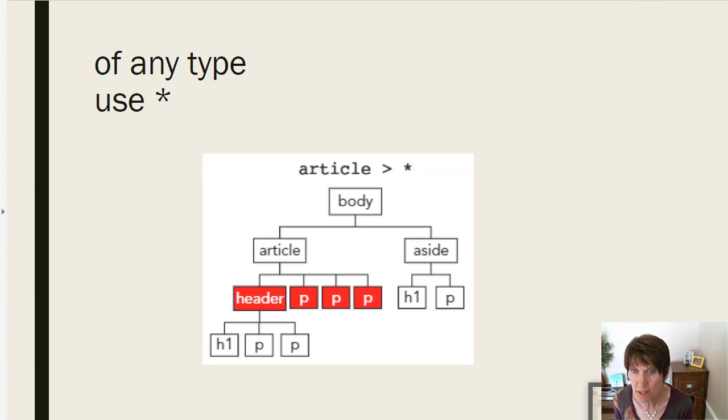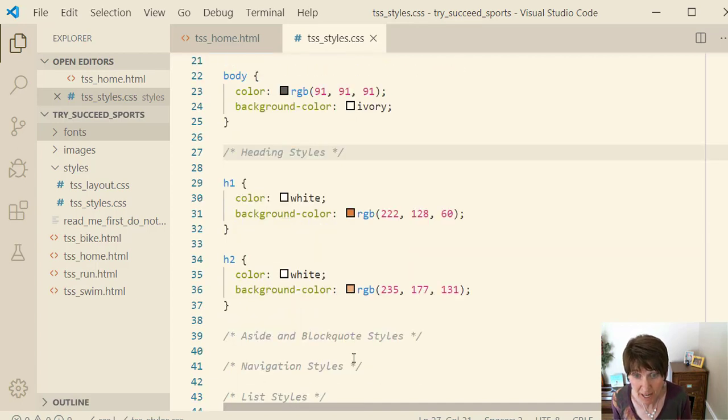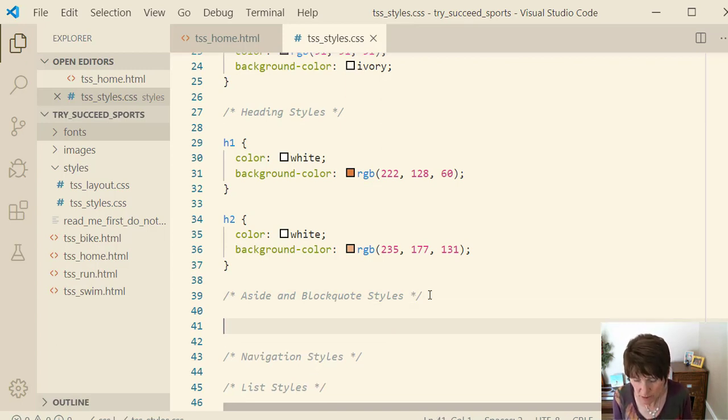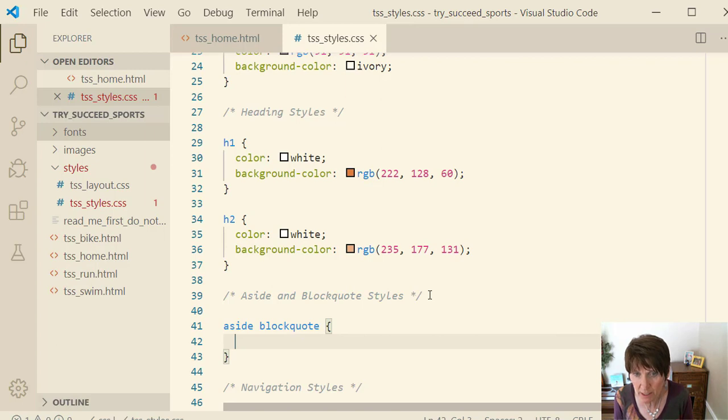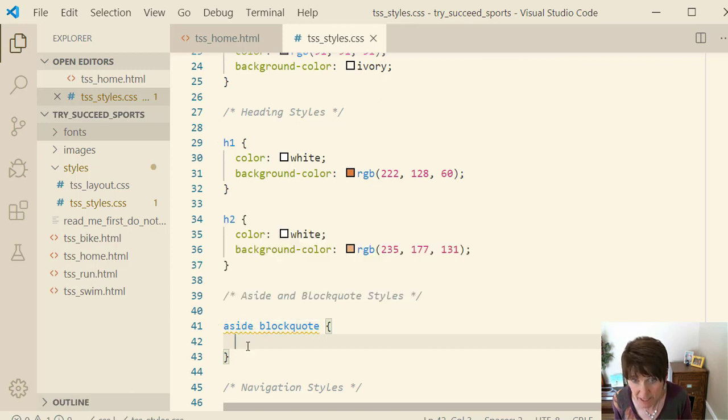Let's go in our code and we'll add one of these that use more than one element and how they're related. So we're going to do this in the aside and block quote sections. And we're going to use the ancestor descendant version. And so we're going to say aside is going to be the ancestor. And then any descendant that is of type block quote. So the way we do that is we put them together with a space. And this will say apply the style to the block quote that is a descendant of an aside.